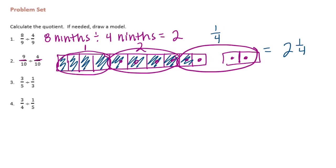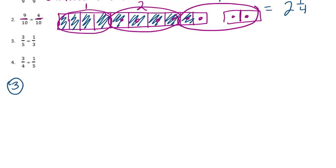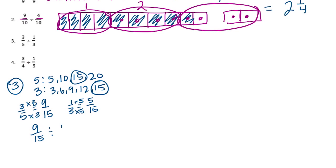Number three: three-fifths divided by one-third. We need to find a common denominator. For five and three, the multiples of five are five, ten, fifteen, and multiples of three are three, six, nine, twelve, fifteen. So our least common multiple is fifteen. Let's make three-fifths into fifteenths — times three gives us nine-fifteenths — and one-third into fifteenths — times five gives us five-fifteenths. Now we have nine-fifteenths divided by five-fifteenths.